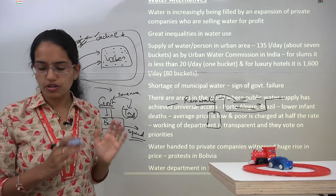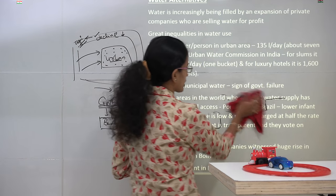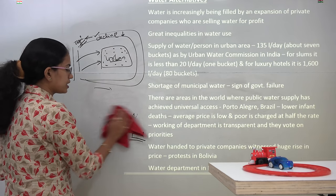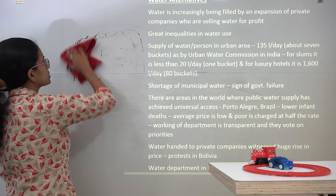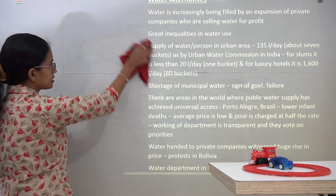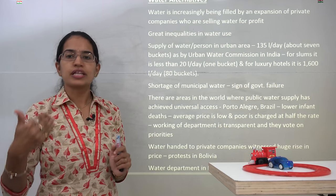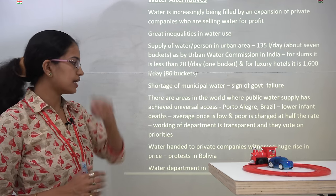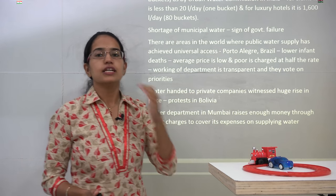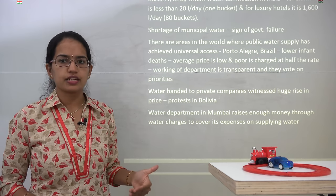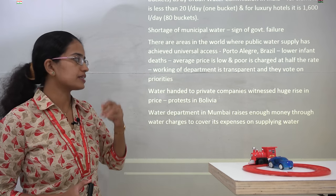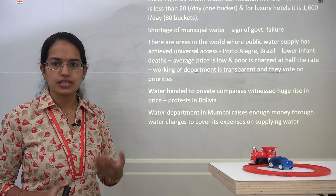The shortage of municipal water is a sign of government failure or the failure of the government machinery. There are examples from the world where good initiatives have been taken. One such example is Porto Alegre, a city in Brazil, where the government provides safe drinking water to every person. For the poor, the price is half of the common average price, so the poor get water at a subsidized rate. The system is very transparent and priorities are decided based on voting, with higher priorities given the first attention.